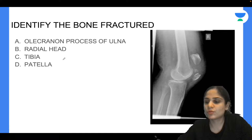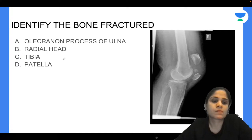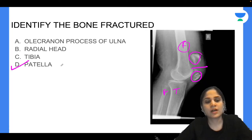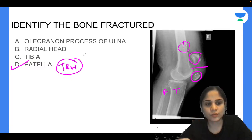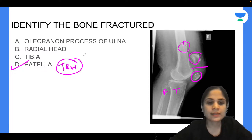Last question: identify the bone fractured. The X-ray shows the femur, tibia, fibula, and a patella split exactly in half — this is a patellar fracture. Treatment is tension band wiring. If there is a comminuted fracture with too many pieces, a partial or complete patellectomy can be done.